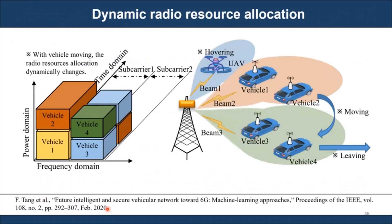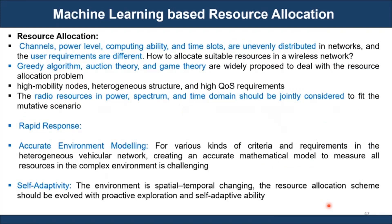For resource allocation, quality references from IEEE papers are recommended. Resource allocation is a traditional and well-known problem. In a NOMA-based system, very good power levels have to be allocated to different users so that successive interference cancellation works well. Computational capability, time slots for each user, energy efficiency, and spectrum efficiency are all very important considerations.